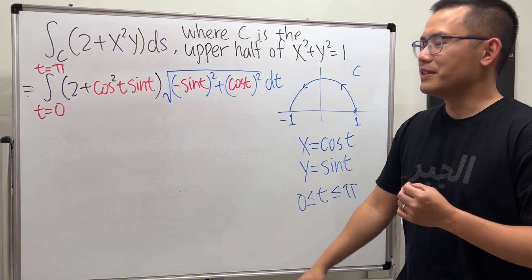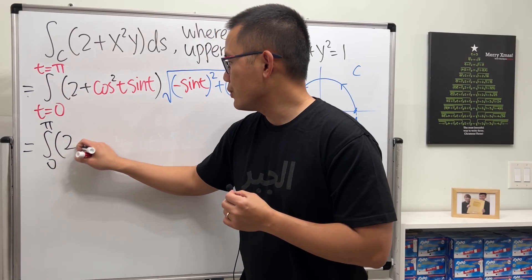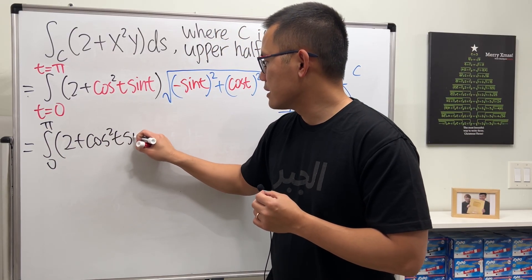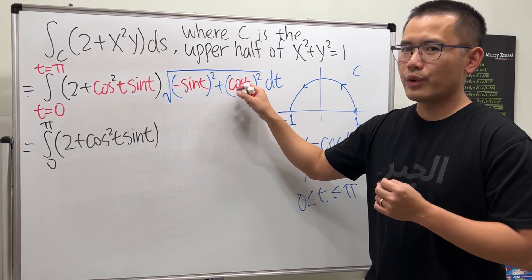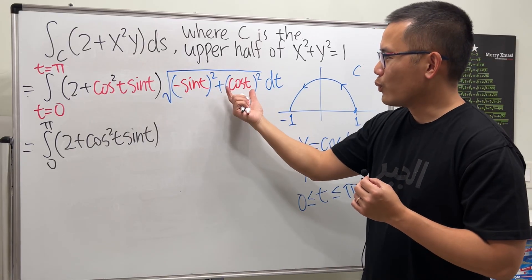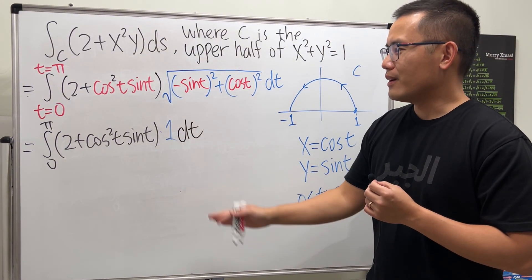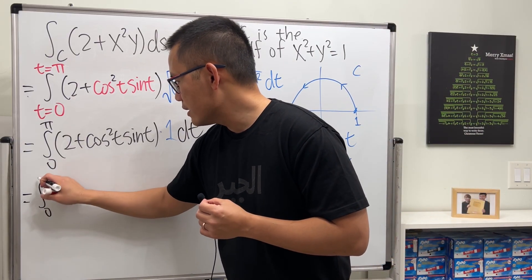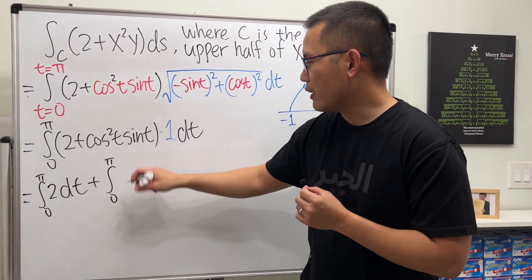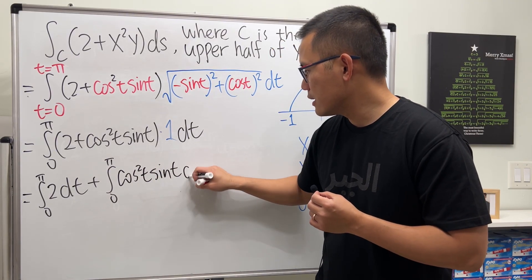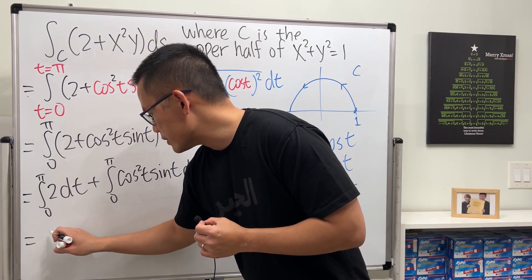Now we can take care of this integral. This becomes the integral from 0 to pi of 2 plus cosine squared t times sine t. The square root term is really nice — it's just sine squared plus cosine squared, which equals 1, so the square root is just 1. We have dt. We break this apart: integrating the 2 gives 2t evaluated from 0 to pi, which is 2pi.